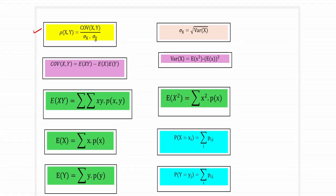The numerator, covariance of x comma y, can be obtained using the formula E of XY minus E of X times E of Y. The term E of XY can be obtained by double summation of xy into the joint probability of x comma y. Since this is a two-variable input, we have two summations — one for the variation of x and the other for the variation of y — multiplied by the joint probability function.